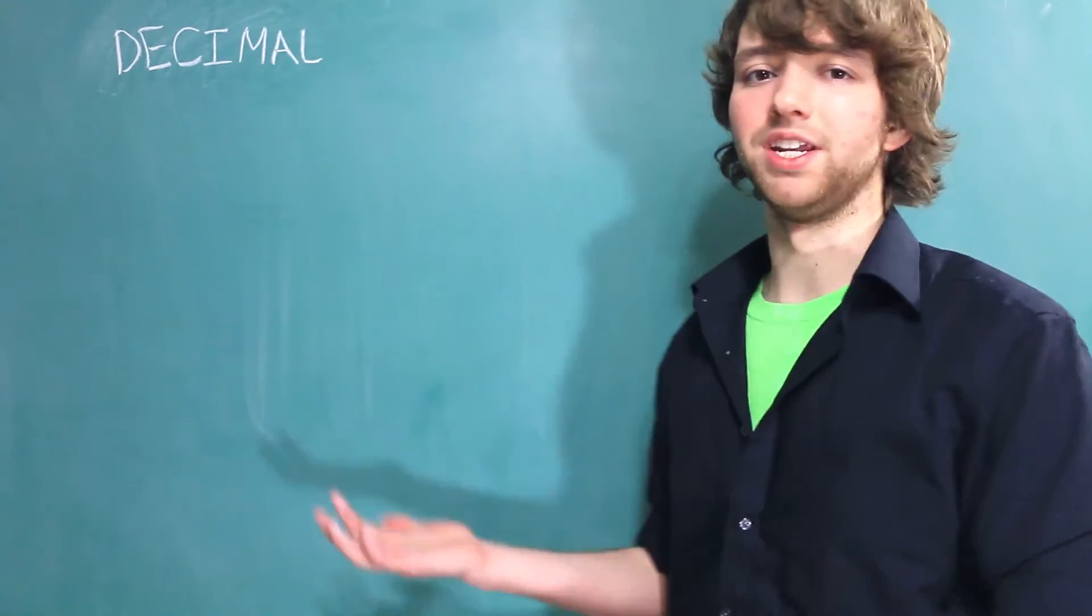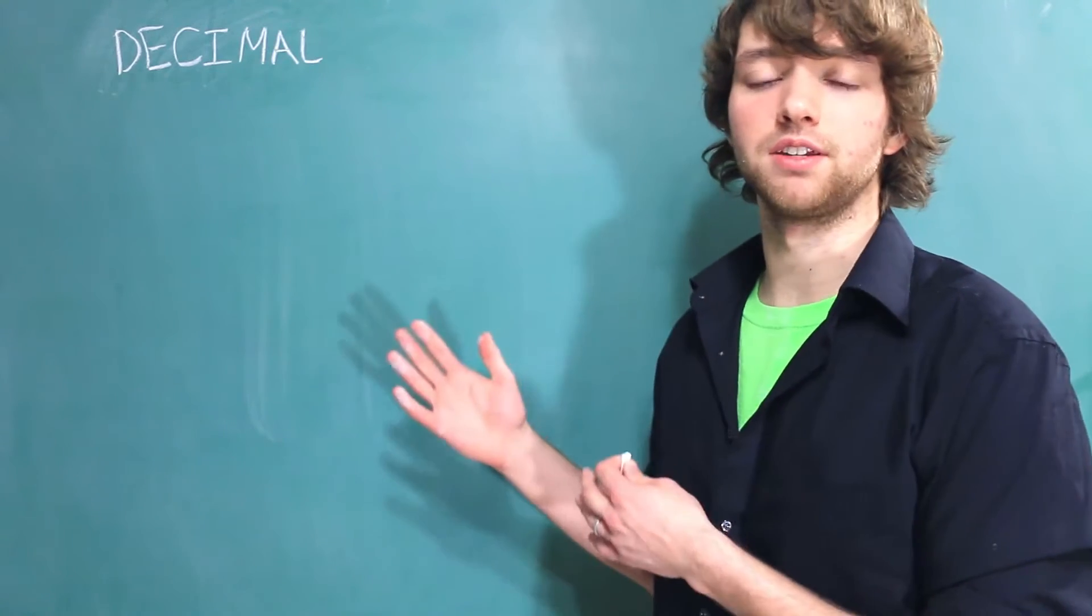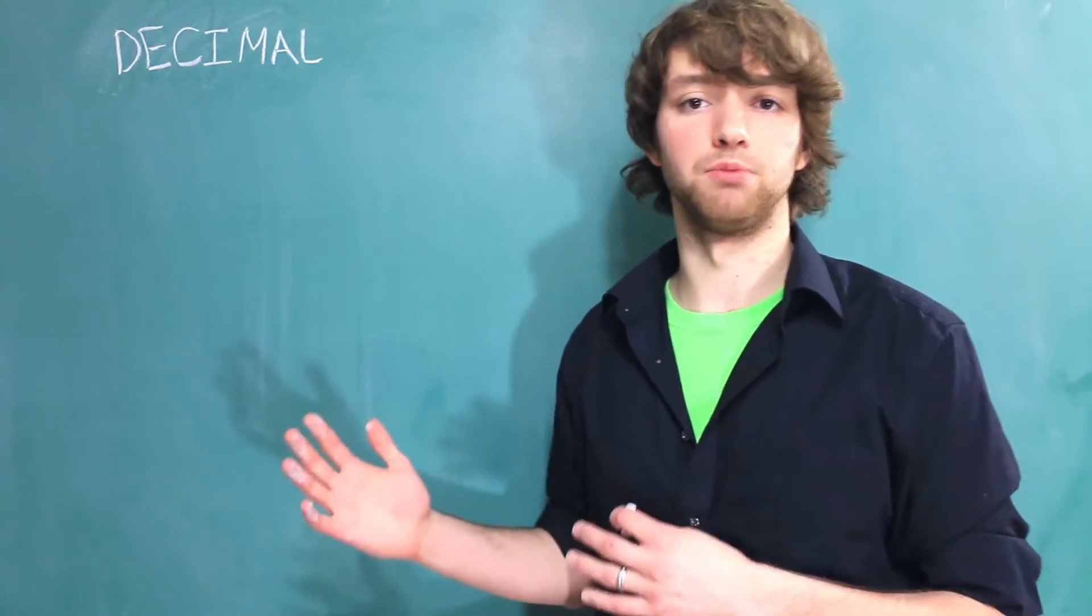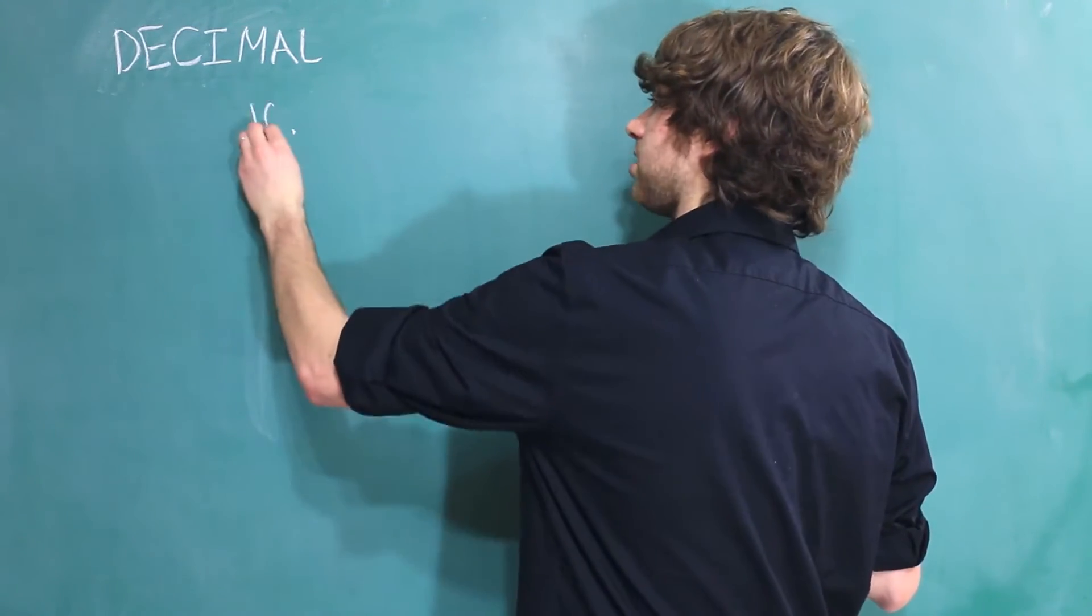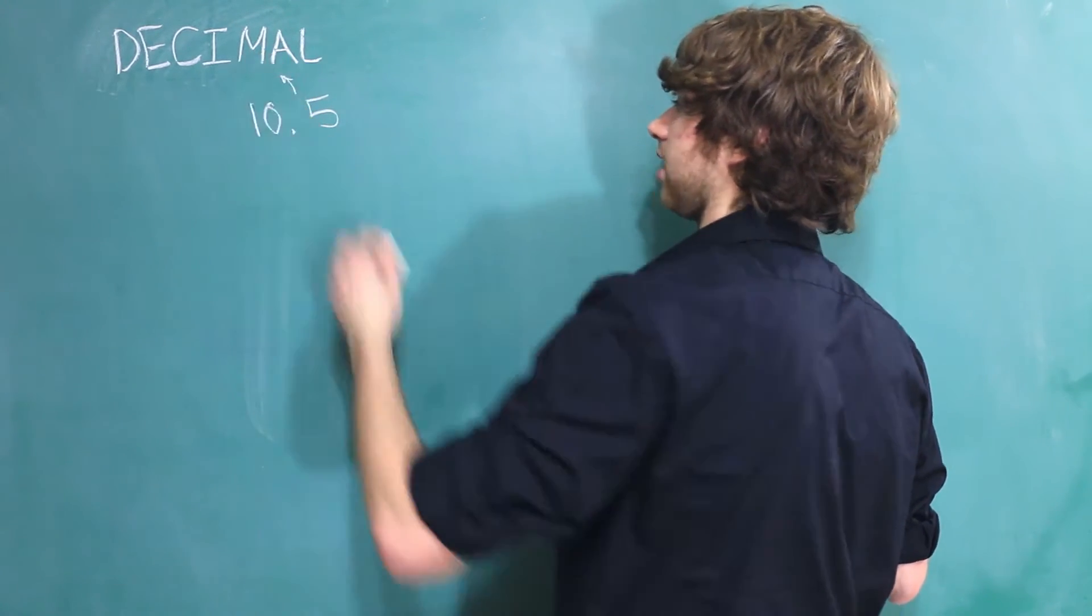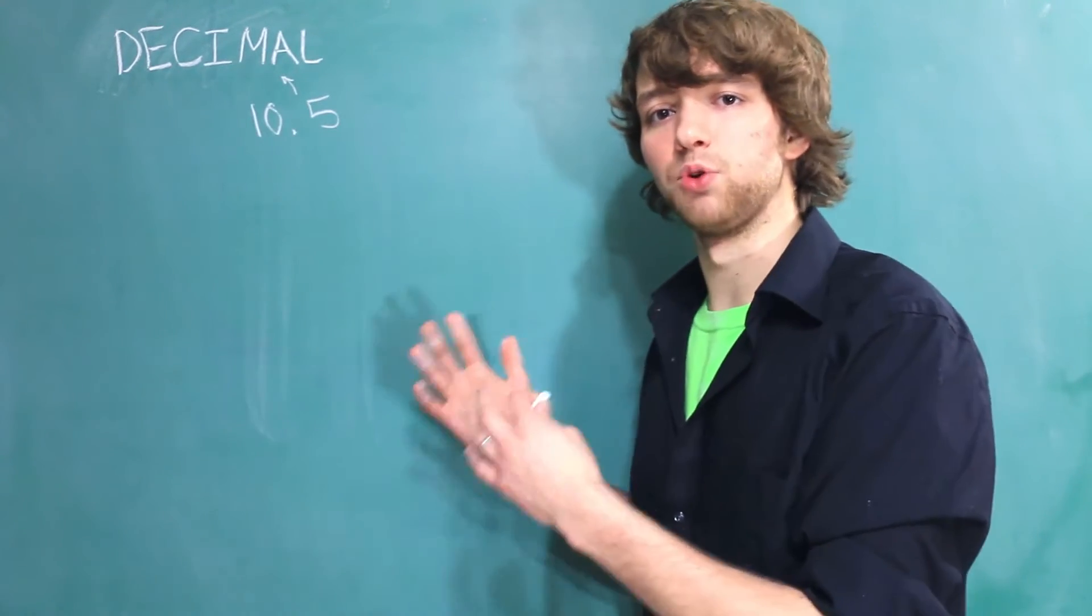The difference between decimal and int though is that the decimal data type allows numbers after a decimal point. So for example, we could store 10.5 inside of a decimal data type column.